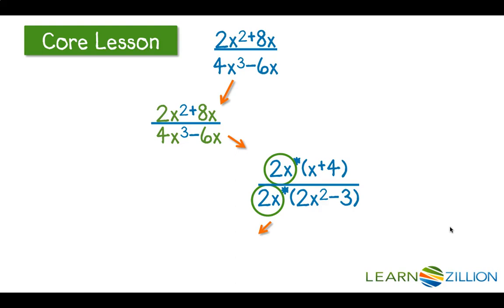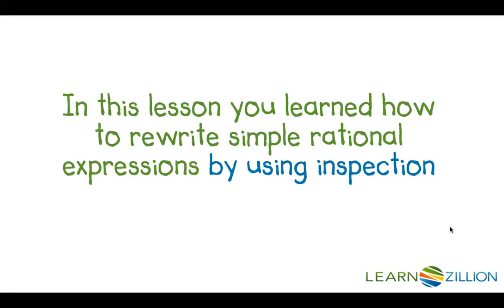Finally, now that I've identified the AB over AC form, I can rewrite it in the equivalent B over C form, which is going to be x plus 4 over 2x squared minus 3. In this lesson, you learned how to rewrite simple rational expressions by using inspection.